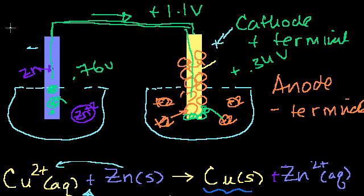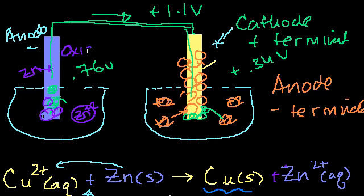So the copper bar is our cathode; the zinc bar is our anode. If someone asks whether oxidation or reduction occurs at the cathode or anode: at the anode, solid zinc jumps into the solution and leaves two electrons behind — it's losing electrons, so it's being oxidized. On the cathode side, copper ions in solution are gaining electrons and their charge is being reduced, so reduction takes place at the cathode.